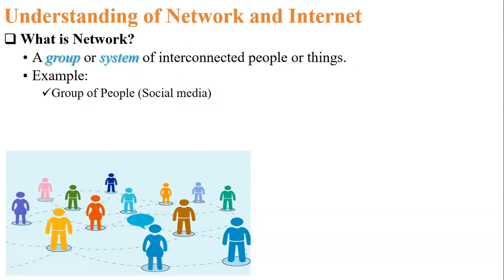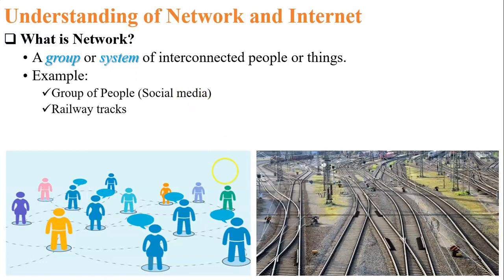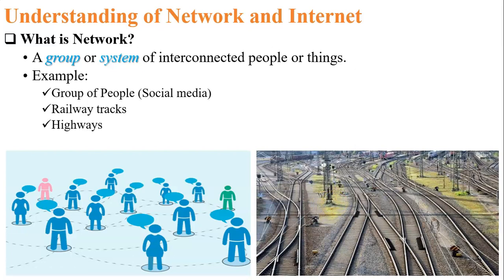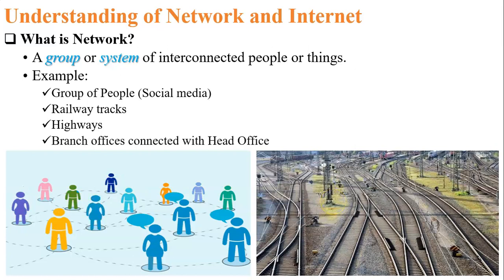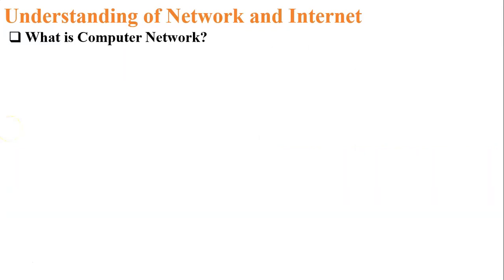Next, railway tracks — different railway tracks connected with each other form a railway network. Similarly, highways are a number of roads connected with each other. Another example: a branch office connected with a head office, the best example being the banking system.